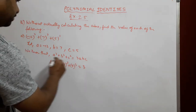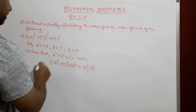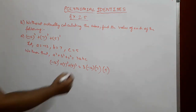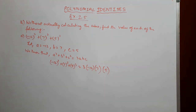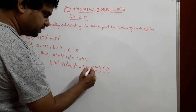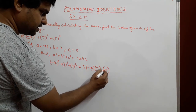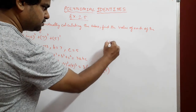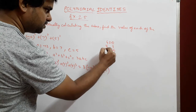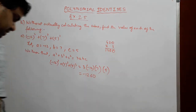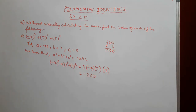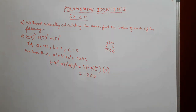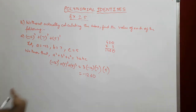Now we calculate: (-12) × 5 = -60, -60 × 7 = -420, -420 × 3 = -1260. So the answer is -1260. Without actually cubing the numbers, we were able to find the answer using this identity.